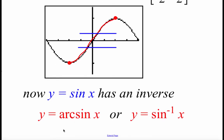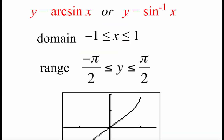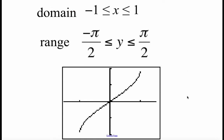There are a couple different ways that we can represent that inverse. We can either call it the arc sine of x, or we can use this little negative first power to represent an inverse, so we would read this y equals the inverse sine of x. The domain of this function is going to be between negative 1 and positive 1. The y values we get back as answers are going to be between negative pi over 2 and positive pi over 2 — that's our range. If we were to graph this on our calculator, we would get a picture that looks something like this.